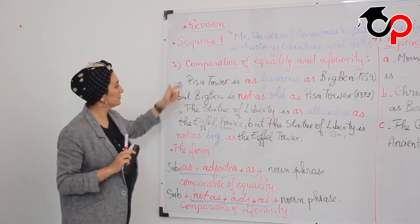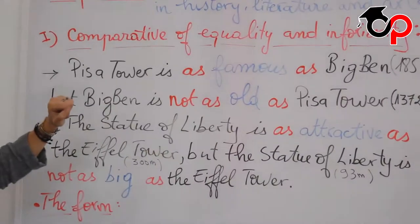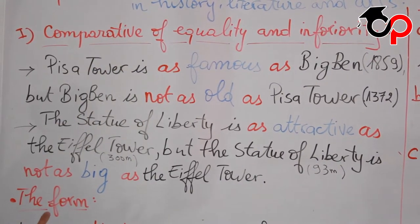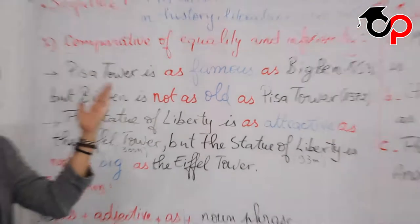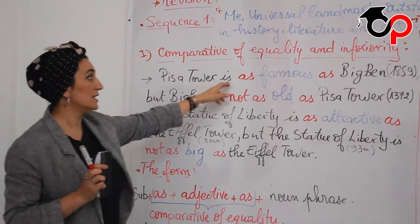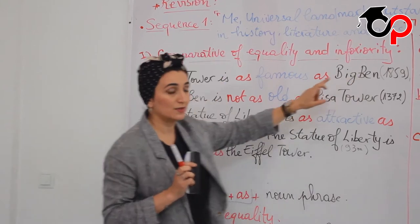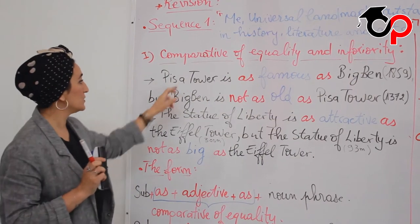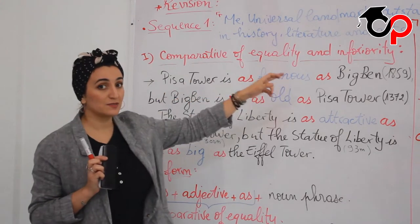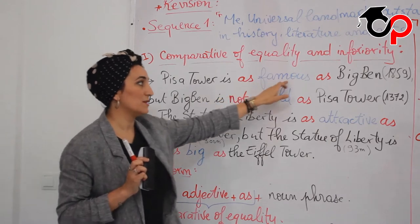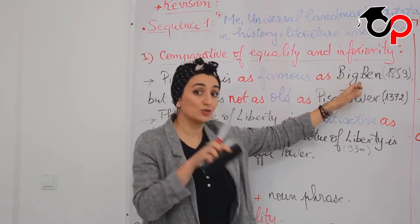Let's see some examples. Pisa Tower, as you know, in the beginning of the year we studied universal landmarks and monuments. Pisa Tower is located in Italy — we can also call it the Leaning Tower. Pisa Tower is as famous as Big Ben. Big Ben is the clock tower situated in London. Both places are tourist destinations, so they are very famous.